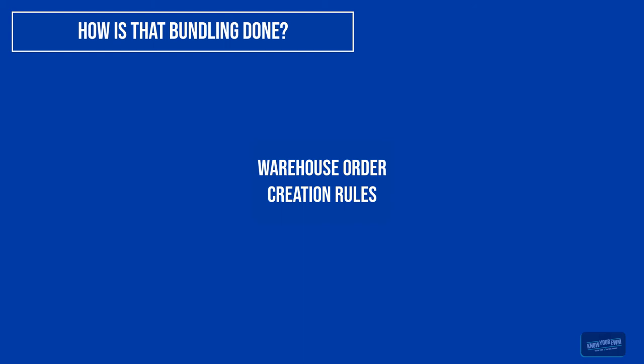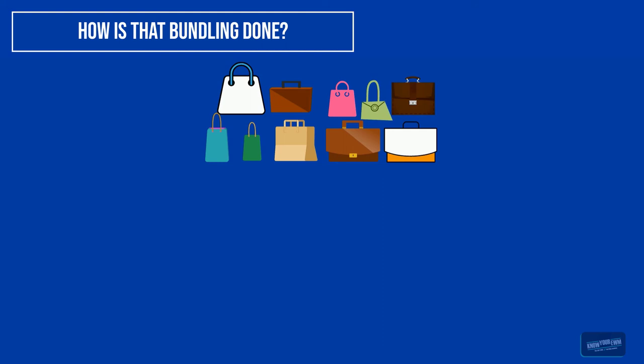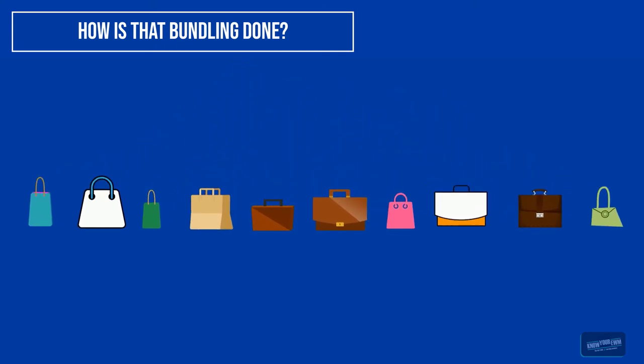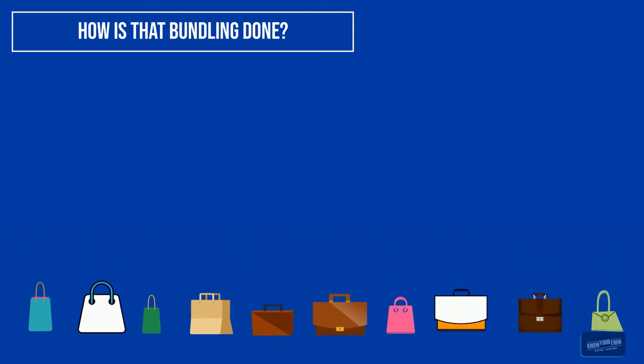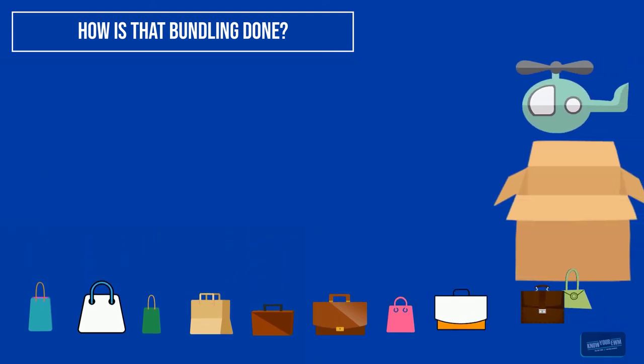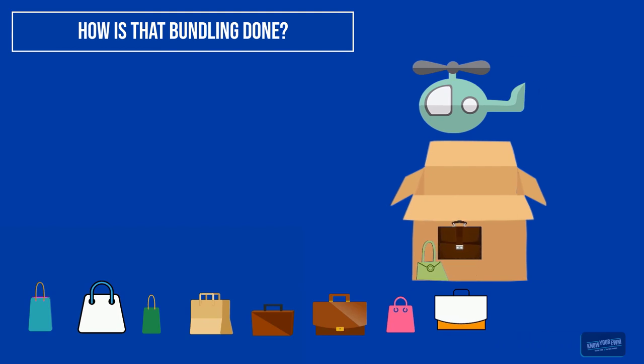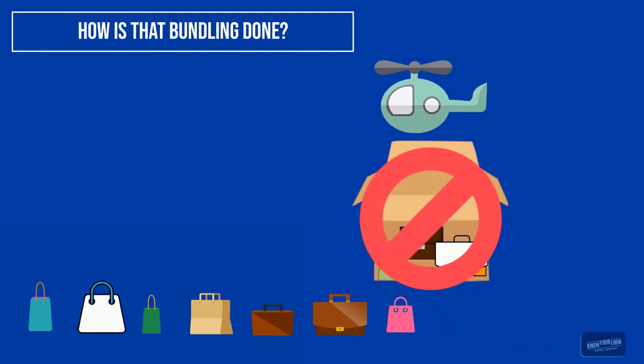Since there are way too many customizing possibilities to explain them all, let us play through an example. Let us assume Mr. Smith orders 10 handbags in all different shapes, colors, and sizes. The EWM creates 10 warehouse tasks for those 10 handbags and the user starts the picking process. But can you spot the problem? 10 handbags can never be carried by one warehouse worker.